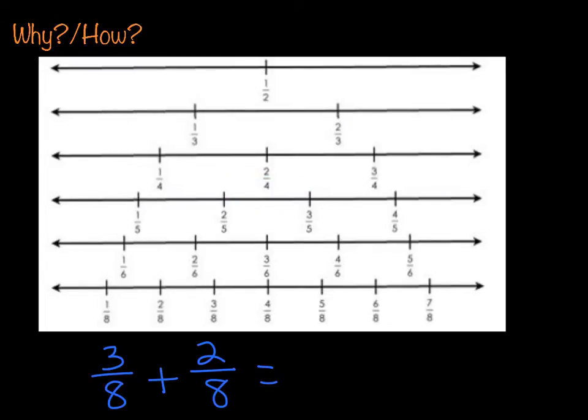Let's say that we have three-eighths plus two-eighths. Where am I going to start for this equation? I'm going to first find my eighths number line, and I'm going to start at three-eighths, and I'm going to jump to the right one, two spots, and my answer is going to be five-eighths.